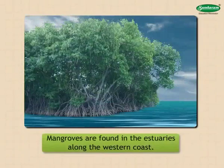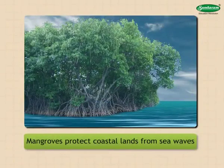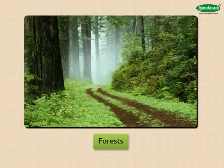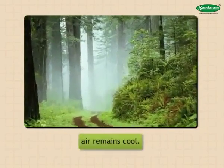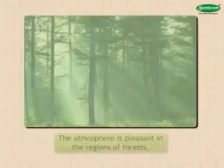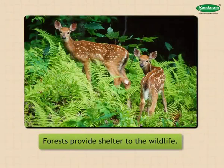Mangroves are found in the estuaries along the western coast. They grow in brackish water containing salts. Mangroves protect coastal lands from sea waves and provide protection to various aquatic life forms of the coastal region. Forests provide a number of benefits: the air remains cool due to forests, they restrict erosion of land, they allow greater seepage of water into the ground, and help in reducing pollution. The atmosphere is pleasant in forest regions, and forests provide shelter to wildlife.